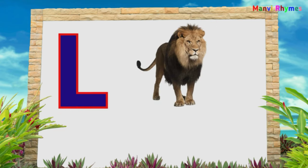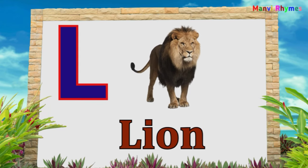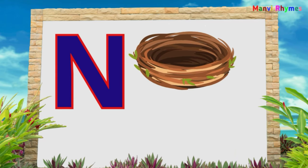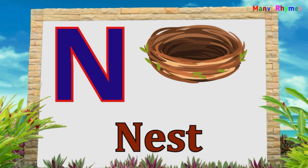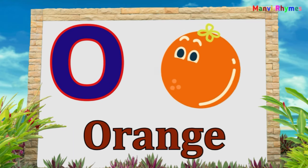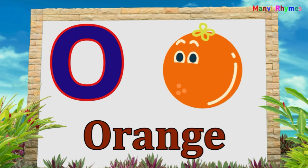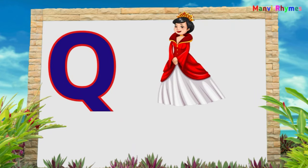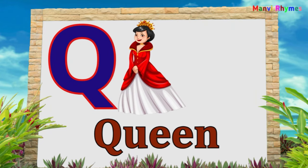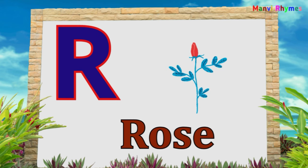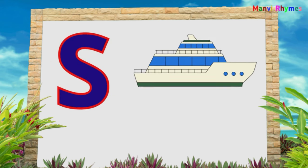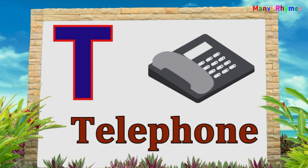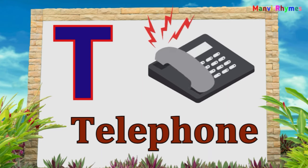L for Lion. M for Monkey. N for Nest. O for Orange. P for Peacock. Q for Queen. R for Rose. S for Ship. T for Telephone.